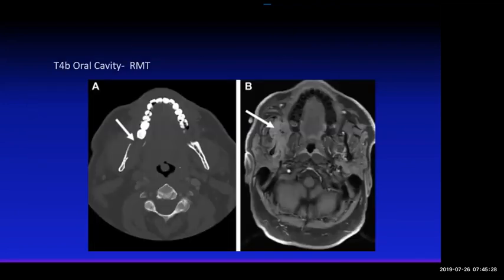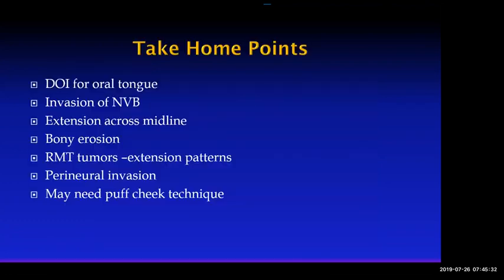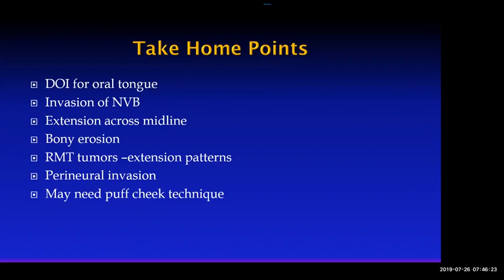The take-home points for oral cavity cancer: start using depth of invasion for oral tongue cancers — it's an important prognostic finding. Always look for invasion of the neurovascular bundle or extension across the midline lingual septum, as these impact surgery. Look for adjacent bony erosion, and look for extension patterns of retromolar trigone tumors into bone or the parotid gland. Always look for perineural invasion — this is where we add real value since the surgeon will never see this. Use the puff cheek technique when you have appropriate history.